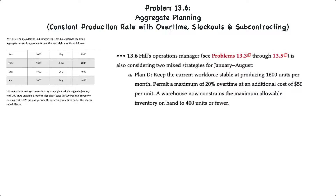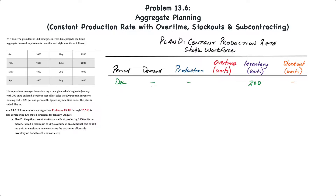Now on to problem 13.6, which covers two additional mixed strategies. Requirement A focuses on Plan D, which is keeping the workforce stable at producing 1,600 units per month. This option also permits a maximum of 20% overtime at an additional cost of $50 per unit. The warehouse now constrains the maximum allowable inventory on hand to be 400 units or fewer, so we have to make sure our inventory doesn't go above 400 units. The only additional costs over and above production costs for this plan include overtime, inventory, and stockouts.